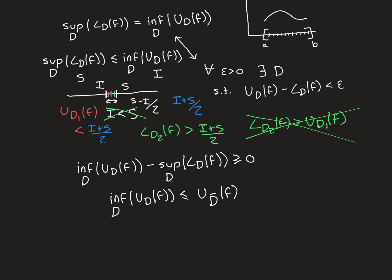Similarly, for the supremum over all dissections of the lower Riemann sums, we know that any specific lower Riemann sum is always guaranteed to be less than or equal to the supremum. So the lower Riemann sum over a specific dissection D-bar is always less than or equal to the supremum of the set of all lower Riemann sums. Again, that's by definition — the supremum is an upper bound for that set, and this specific lower sum is something inside that set.